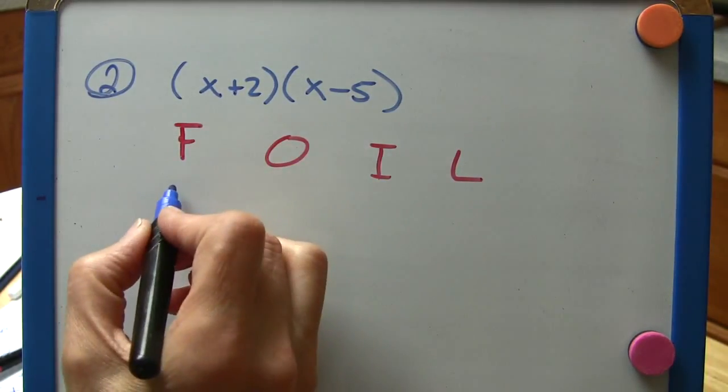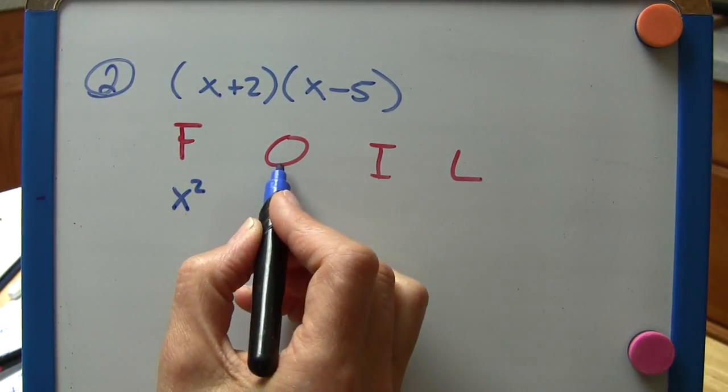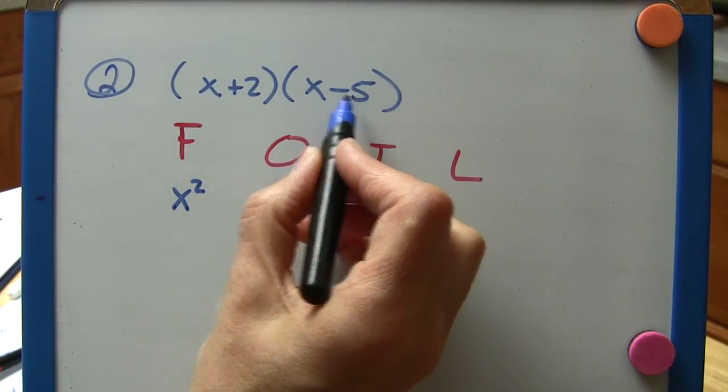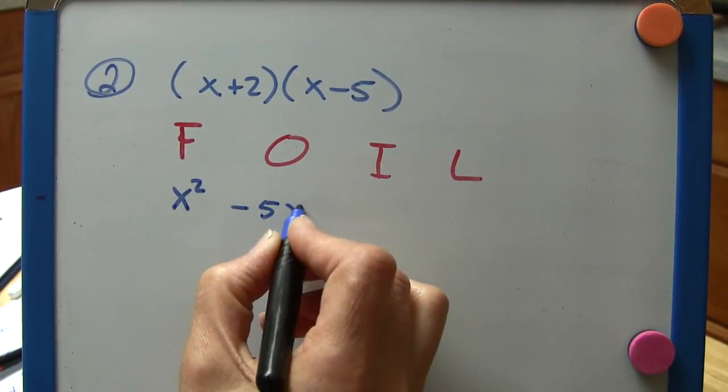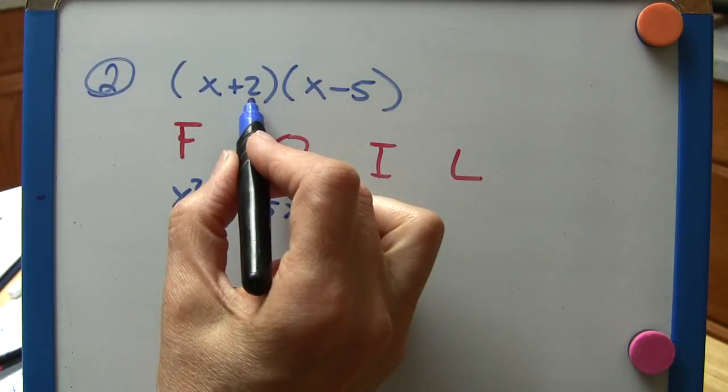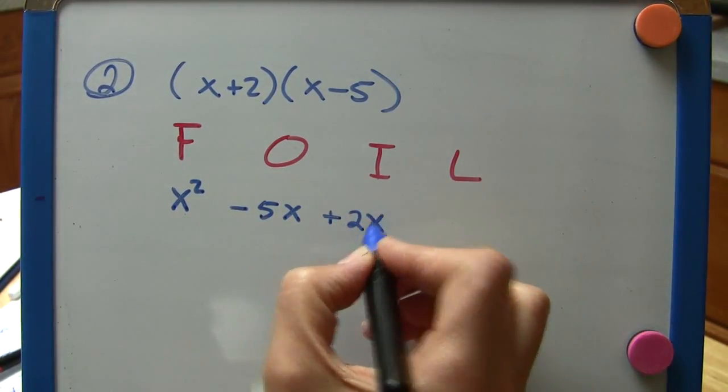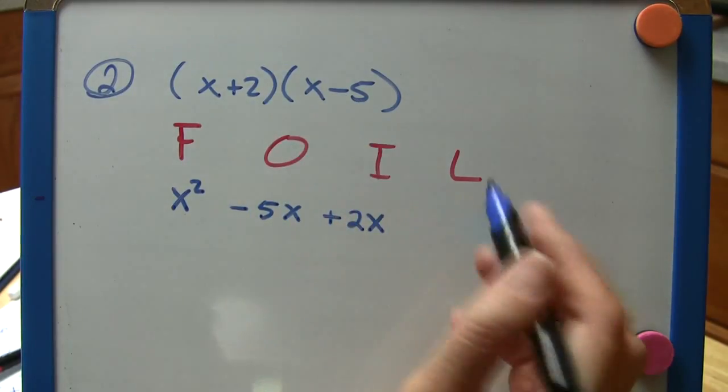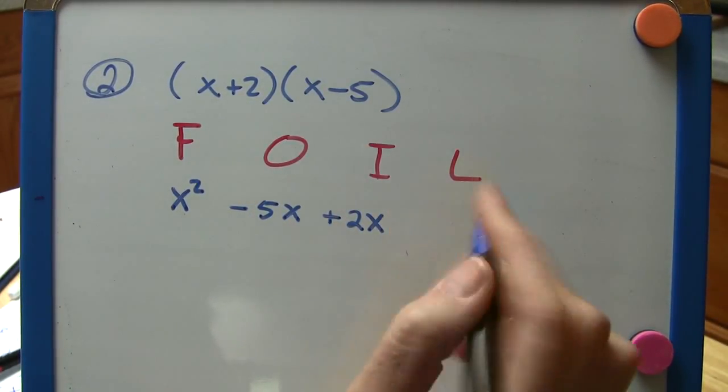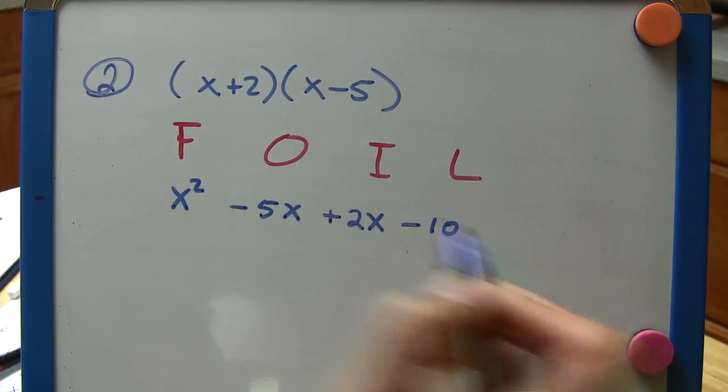So the first, well that's x times x, which is going to be x squared. The outer is negative 5 times x, so I'm just going to write minus 5x. The inner is 2 times x, so plus 2x. And then the last is going to be 2 times minus 5, so that's going to be minus 10.